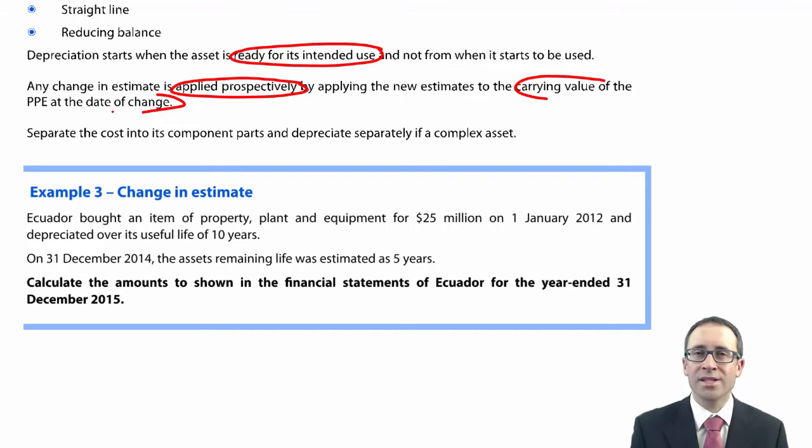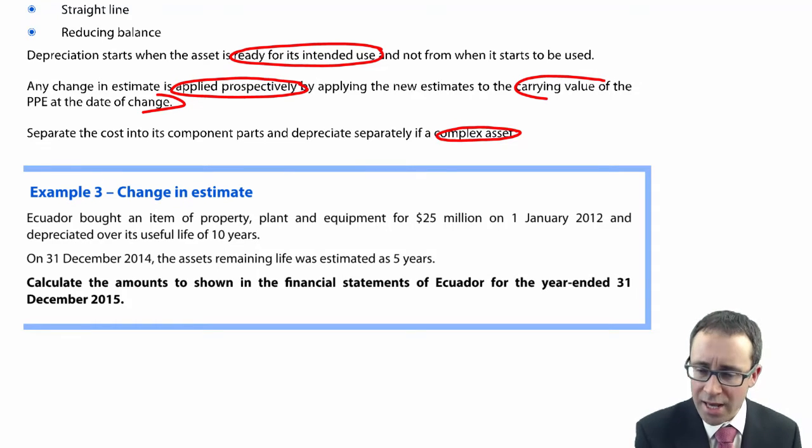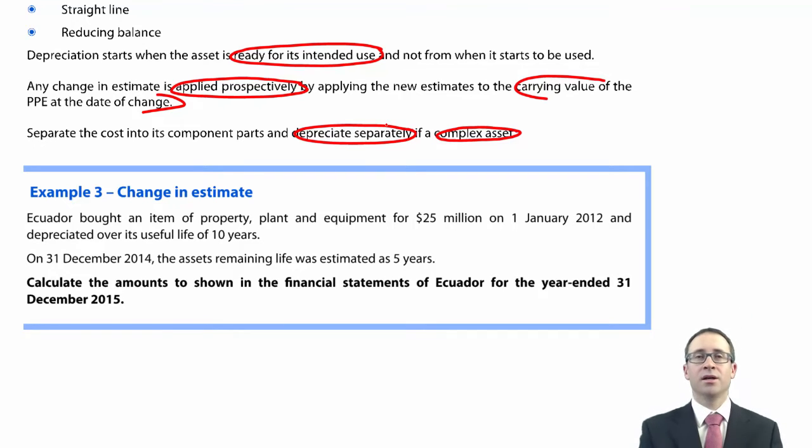The other bit, maybe seen in some objective tests or multiple choice questions that you get in F7, but the key bit there is that if you have a complex asset, maybe things such as an aeroplane or a ship that has lots of different component parts to it, remember you depreciate each of those component parts separately. So for the aeroplane, you take the engines and depreciate them over, say, 10 years. You would take the fuselage, the main body of the plane, and maybe depreciate that over 20. The interior of the plane, maybe you would depreciate that over five years. So allocate the cost of the component part and depreciate each component part separately.